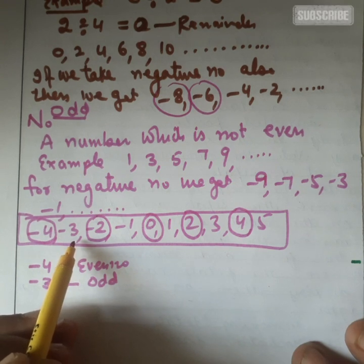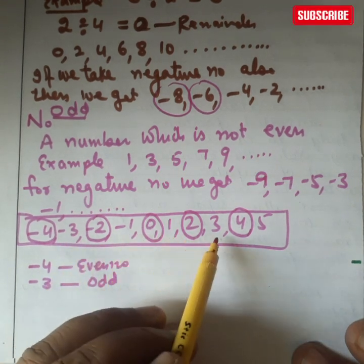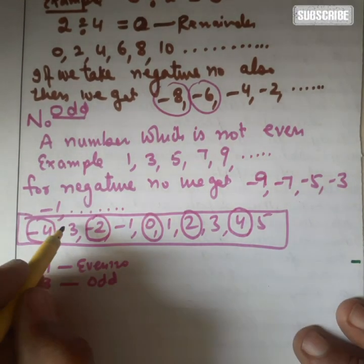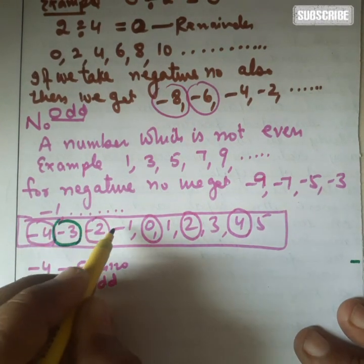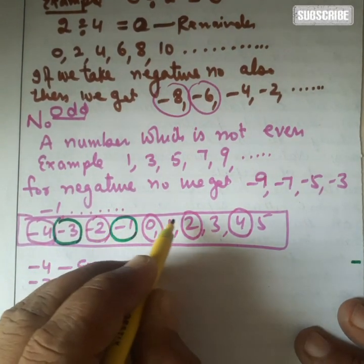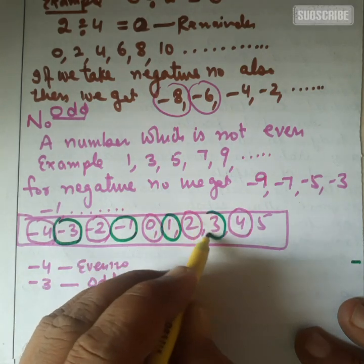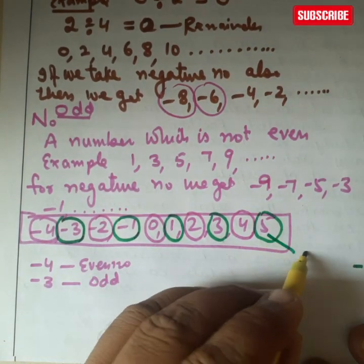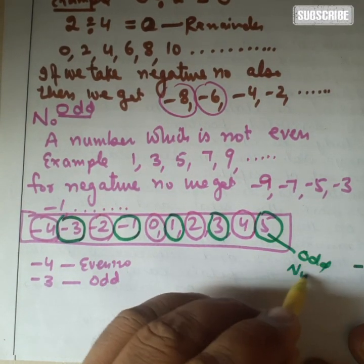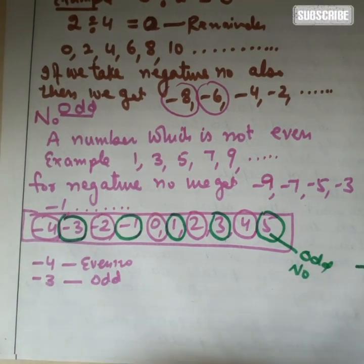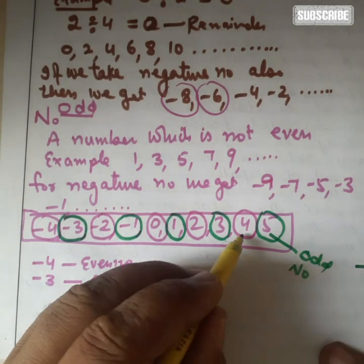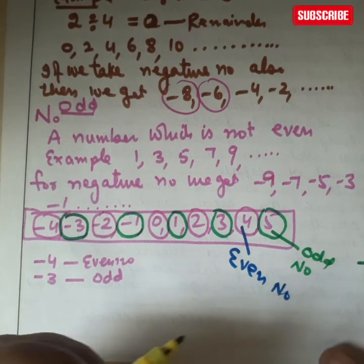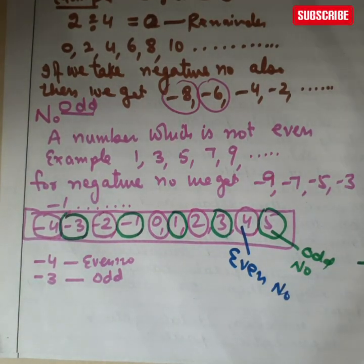Now consider the rest of the numbers: minus 3, minus 1, 1, 3, and 5. All these numbers give a remainder when divided by 2. You can mark them in a green circle — minus 3, minus 1, 1, 3, and 5. All these green-circled numbers are odd numbers because they give a remainder. So 4 is even because it gives no remainder. These are some examples of even and odd numbers.